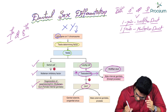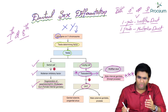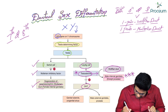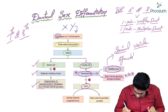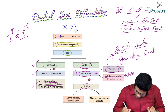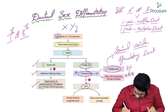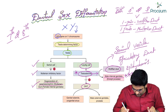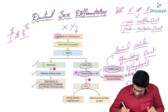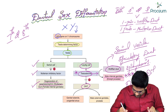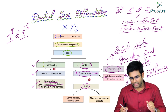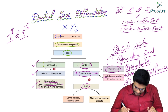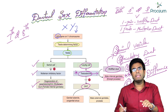The expression of the Wolffian duct in a male is under the influence of testosterone. This Wolffian duct helps in the formation of male internal genitalia. The derivatives of Wolffian duct include seminal vesicles, ejaculatory duct, epididymis, and ductus deferens — remembered by the mnemonic SEED.